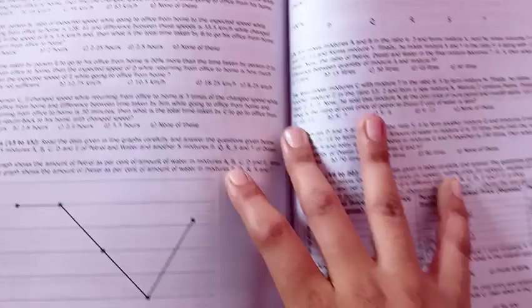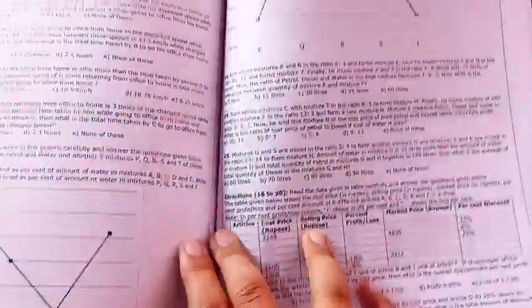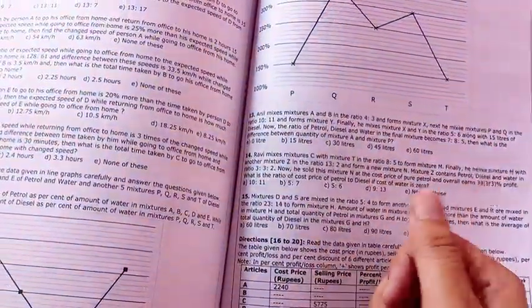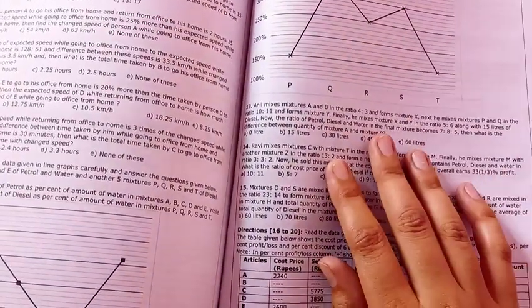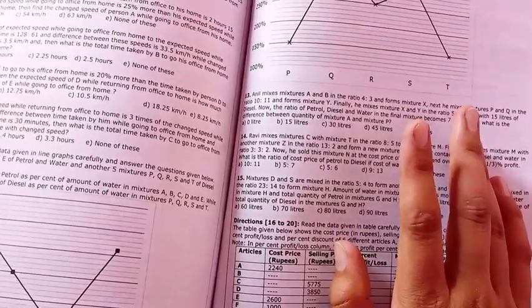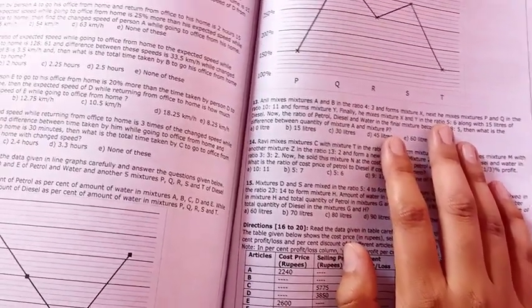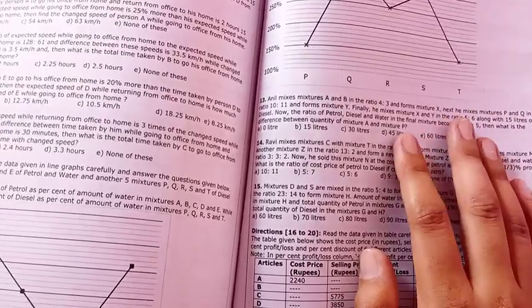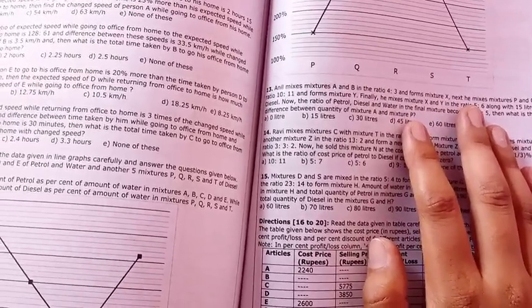These are the types of DIs which we often see in the mains examinations. So I found the level of this book really good, and if you want to start your preparation for DI especially, you can start with this. When you solve DIs like arithmetic-based DIs, your arithmetic concepts also improve. So this book is really good to start your preparation for mains level quant especially.